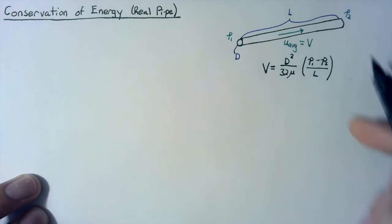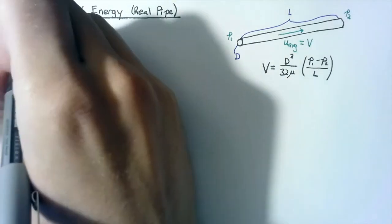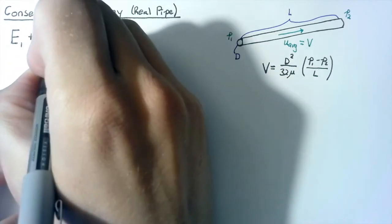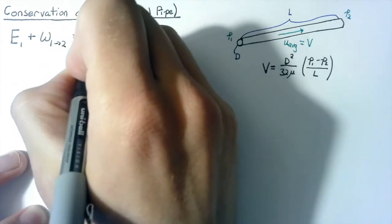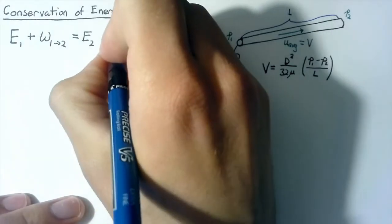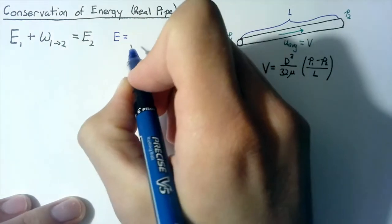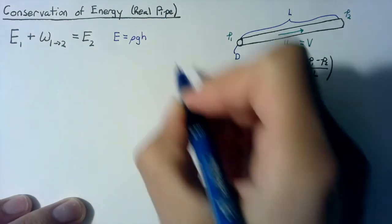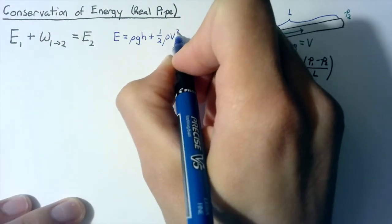So this is our situation, let's look at conservation of energy. In the most general form, we can say that E1, the energy at state one, plus the work done from state one to state two is equal to the energy at state two. And just as a reminder, the energy that we're interested in is the potential energy rho times G times H plus the kinetic energy, which is one half times rho V squared.